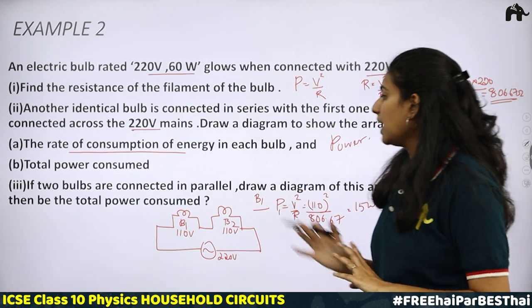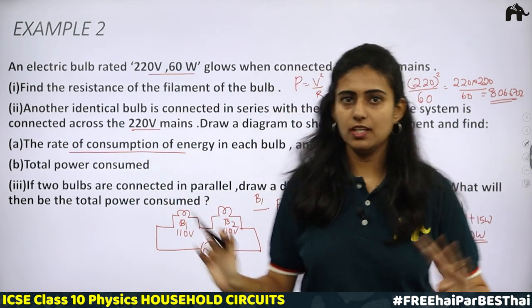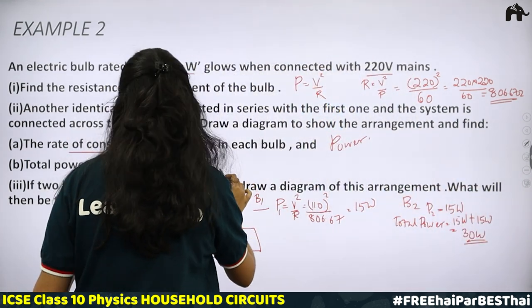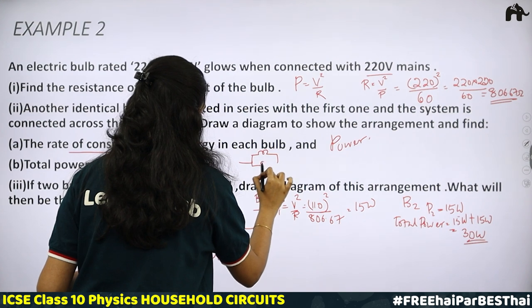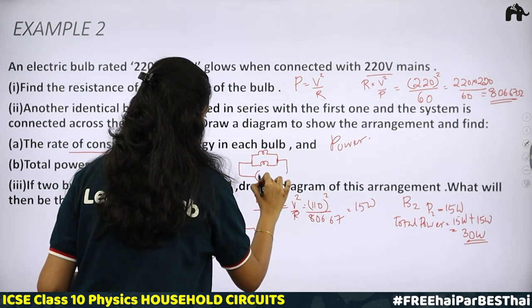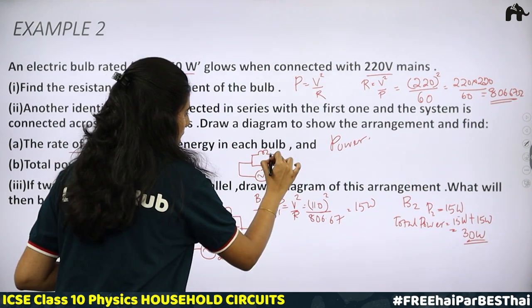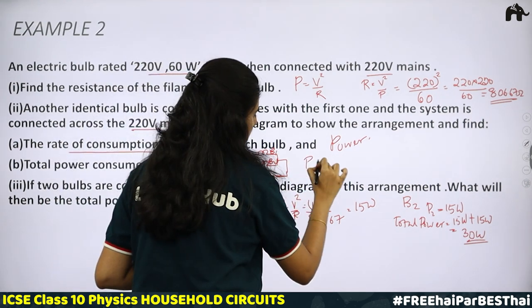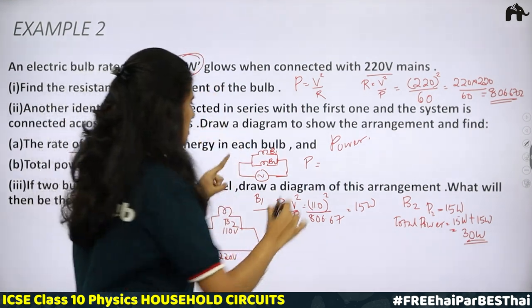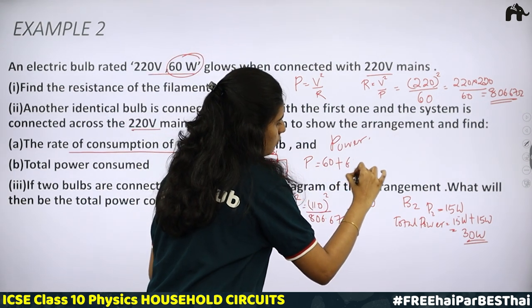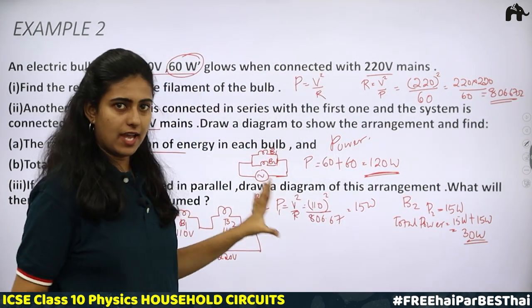If the two bulbs are connected in parallel and connected to 220 V mains, each bulb gets the full 220 V. Since each bulb is rated 60 W at 220 V, power for bulb 1 is 60 W and for bulb 2 is 60 W. Total power consumed = 60 + 60 = 120 watts.